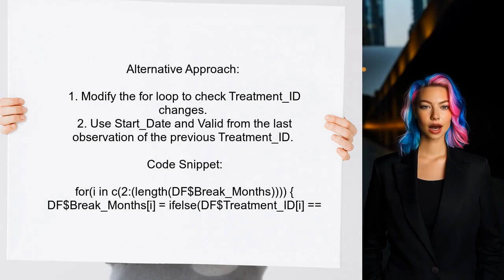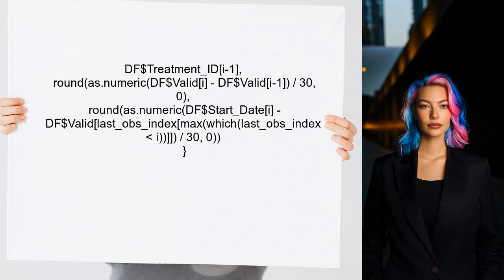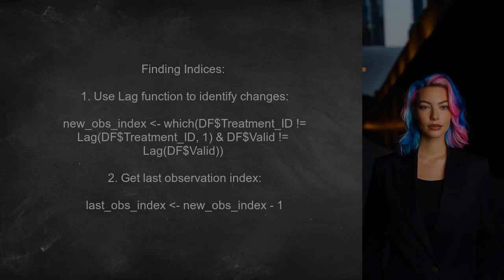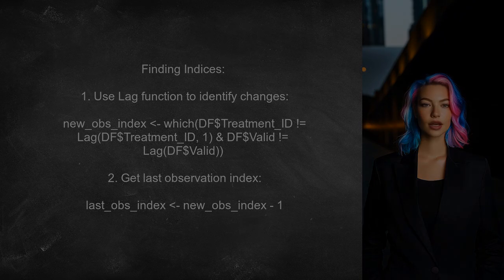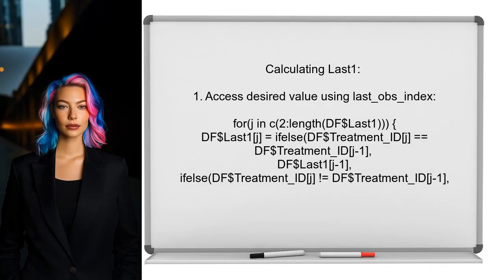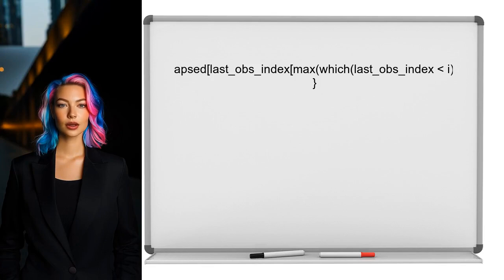An alternative approach involves modifying the for loop to account for changes in treatment ID. When the treatment ID differs from the previous observation, the calculation should use the start date of the current observation and the valid date of the last observation from the previous treatment ID. The user also explains how to find the indices of new observations using the lag function from the misc package. This helps identify where treatment ID and valid date change, allowing for accurate calculations. For the last one variable, the user suggests accessing the desired value using the last obs index to ensure accurate comparisons when treatment ID changes.